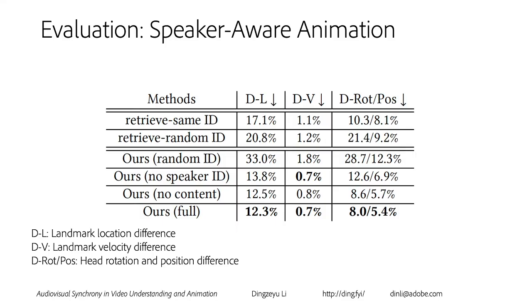In our paper, we have a series of evaluations on speaker awareness. The different columns show the difference in landmark movement, velocity movement, and head rotation and position difference. Our model achieves the lowest error in the metrics that can determine the speaker's style or identity.